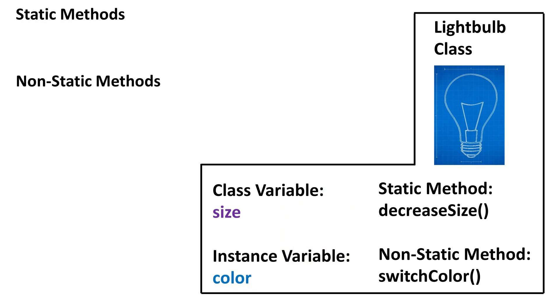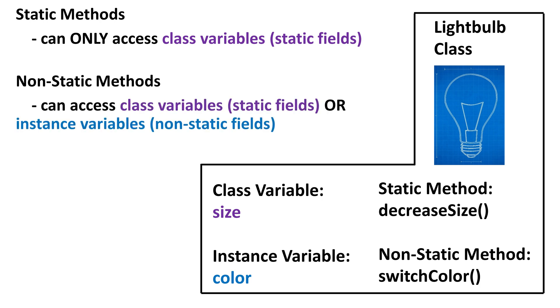The final thing to know is that static methods can only access class variables, while non-static methods can access both class variables and instance variables. This is why the switchColor method had to be non-static, so it could access the instance variable color which it changes. This fact will be important when you learn about writing classes in later lessons.